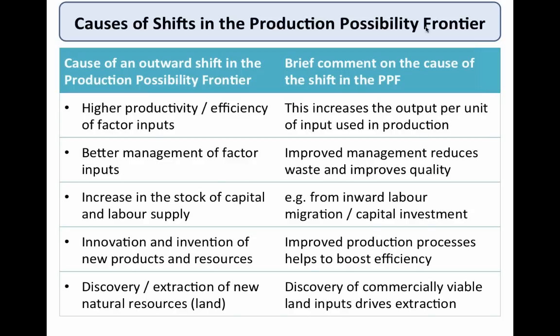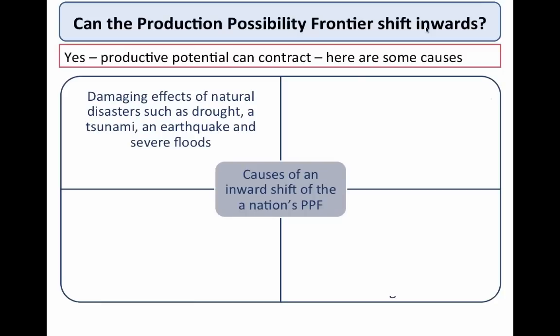It's quite important to revise the fundamental causes — the reasons why the PPF might shift outwards. I've given you five possible causes: higher productivity, better management, increasing the stock of capital, innovation and invention, and discovery or extraction of new natural resources. In the exam, make the connections and explanations clearly. For example, if productivity goes up, output per unit goes up, costs effectively fall, and you can produce more. If new natural resources are discovered and are commercially viable, exploration will eventually lead to extraction and increased output.